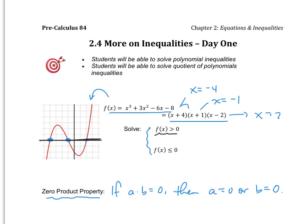The very first thing they want us to determine is where is our function greater than 0 — in other words, where is it above the x-axis? Notice that it is above the x-axis between our x values of negative 4 and negative 1. Using interval notation, it is greater than 0 when x is greater than negative 4 and less than negative 1. It is also greater than 0 from 2 to infinity.